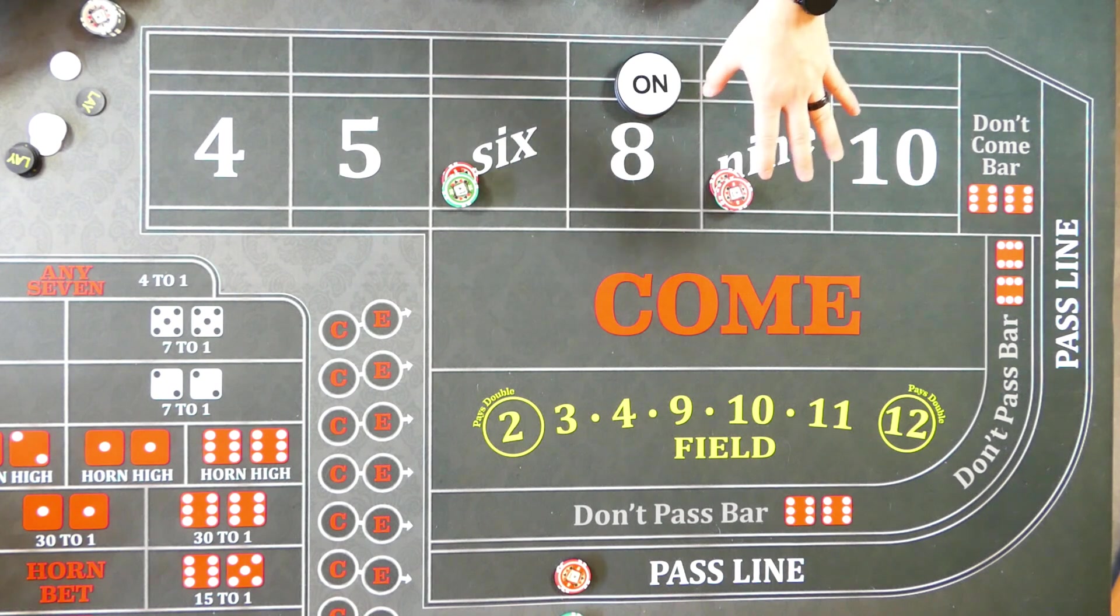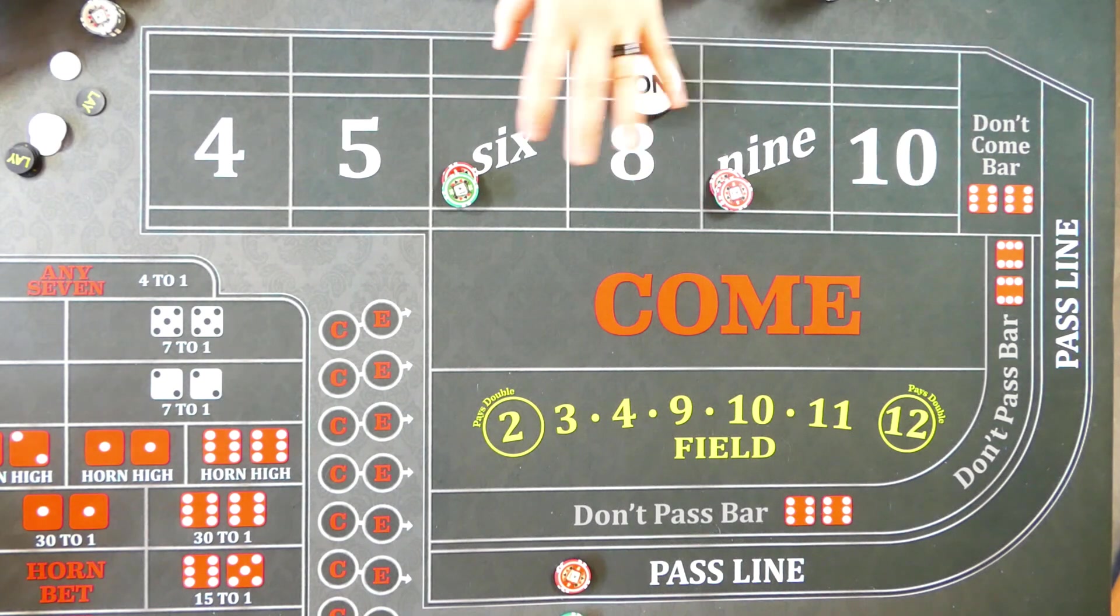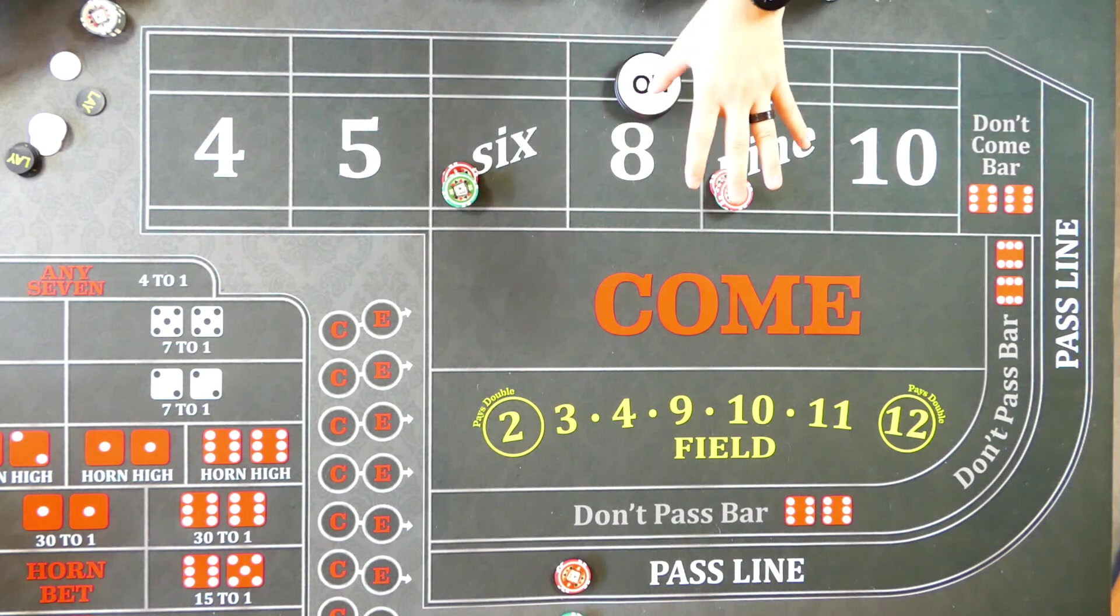However, some of the people that were pressing a little bit more aggressively, they won quite a bit more than that. But that's some of the pros and cons of the two and three point molly system.